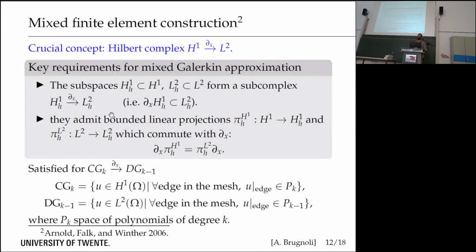These discrete spaces need to admit bounded linear projections, π^H for H1 and π^L for L2, that commute with the derivative. This is fundamental if you want to achieve discretization with the optimal convergence rate possible.